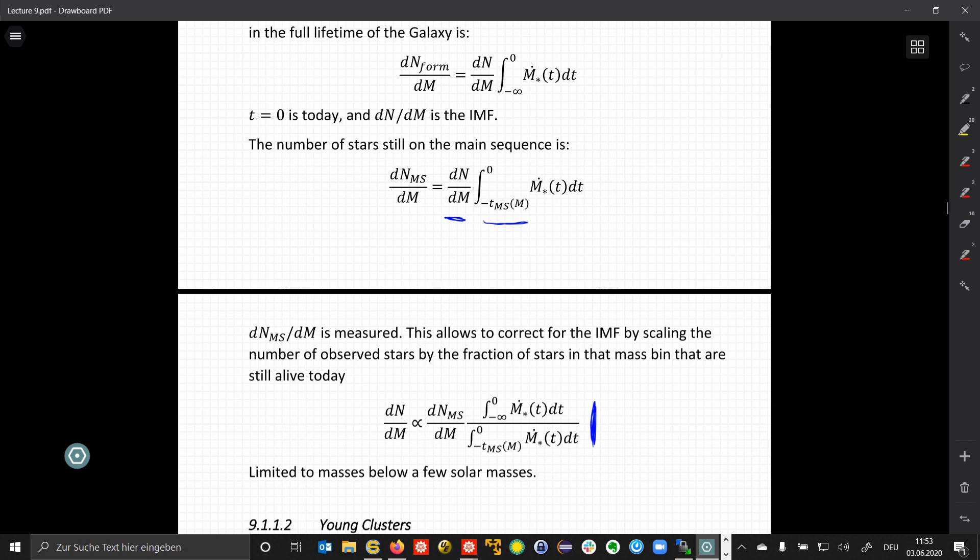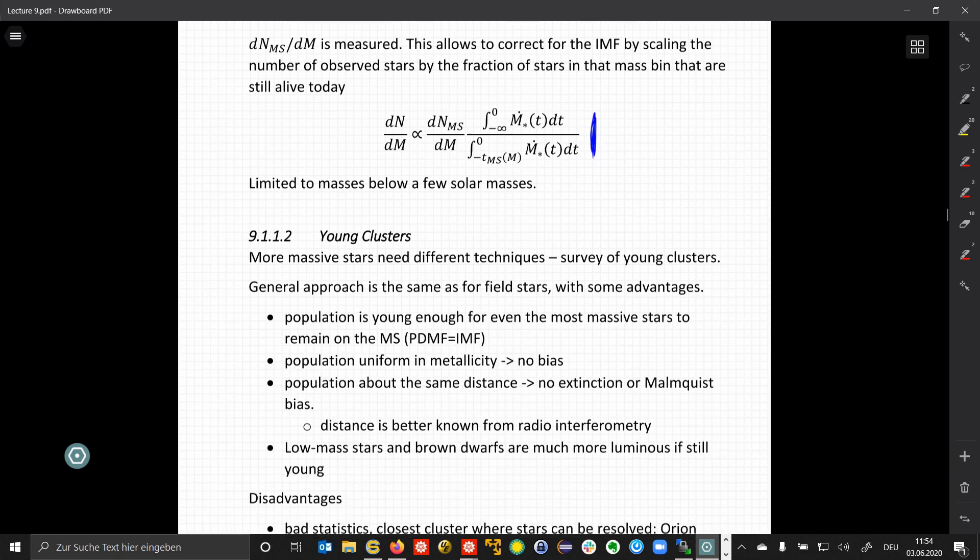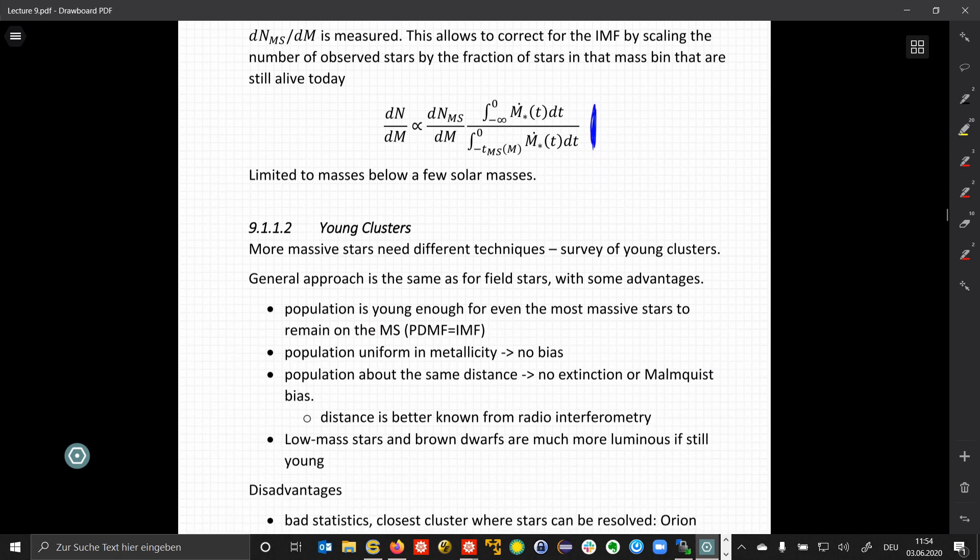The initial mass function is measured, and then we can correct by scaling the number of observed stars by the fraction of stars in that mass bin that are still alive today, so by the ratio of the two. And this is limited to masses below a few solar masses, because higher mass stars have too short lifetimes. We can also look at the initial mass functions in enclosed environments, or in environments or clusters that formed together. One example is young clusters.